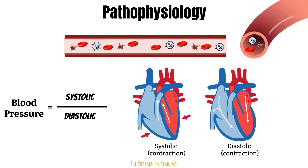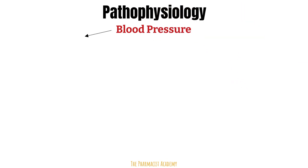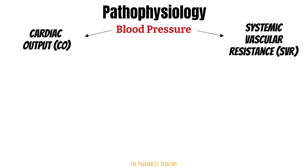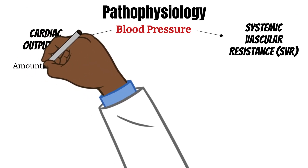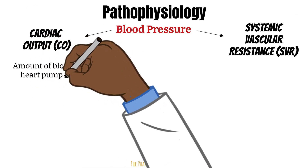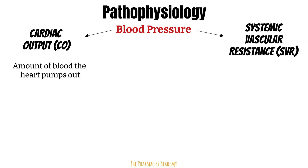According to the American Heart Association, normal blood pressure is less than 120 over 80. Blood pressure is influenced by cardiac output and systemic vascular resistance. The cardiac output refers to the amount of blood that the heart pushes out during a contraction. The more blood is forced out, or if cardiac output increases, the more filled the blood vessels will be, which will increase the pressure inside. If the cardiac output is low, the blood pressure will be low as well.